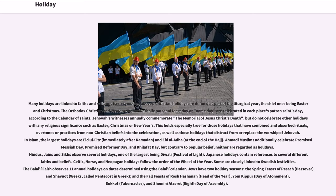Celtic, Norse, and Neo-Pagan holidays follow the order of the Wheel of the Year, and some are closely linked to Swedish festivities. The Baha'i Faith observes 11 annual holidays on dates determined using the Baha'i Calendar. Jews have two holiday seasons: the spring feasts of Pesach (Passover) and Shavuot (Pentecost in Greek), and the fall feasts of Rosh Hashanah (head of the year), Yom Kippur (Day of Atonement), Sukkot (Tabernacles), and Shemini Atzeret (8th day of assembly).